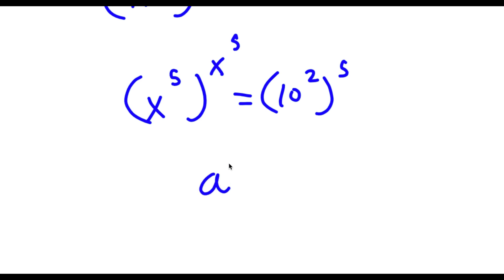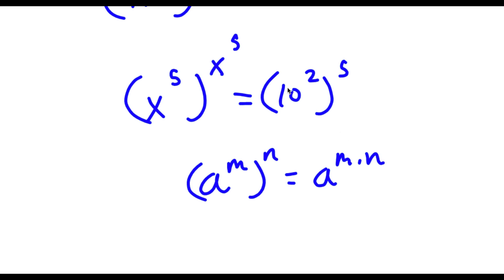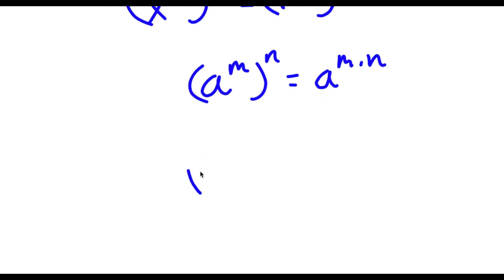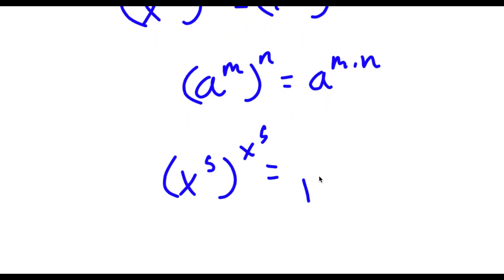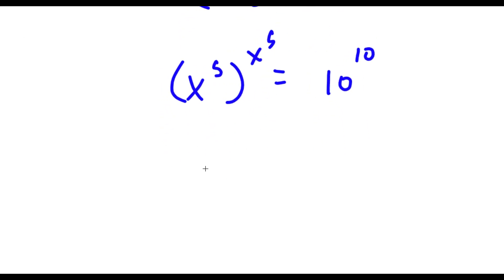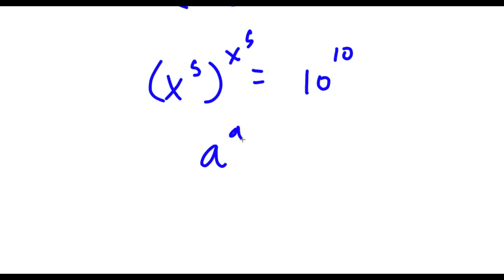Now if I have something in the form a to the power of m to the power of n, this is equal to a to the power of m times n. So 10 to the power of 2 to the power of 5 equals 10 to the power of 2 times 5, which is 10 to the power of 10. Now if I have something in the form a to the power of a is equal to b to the power of b, this means that a is equal to b.